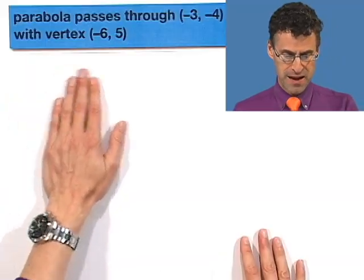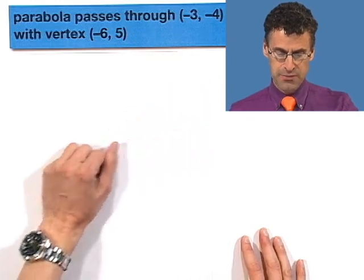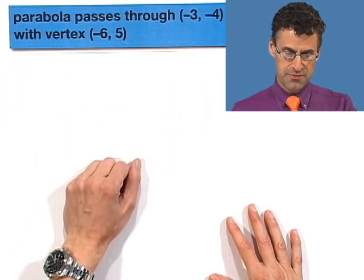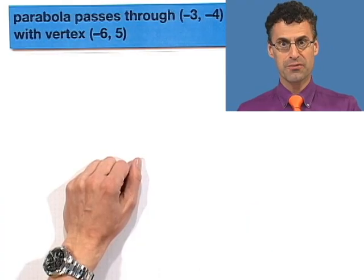Let's find the equation for the parabola that passes through the point negative 3 comma negative 4 and has a vertex of negative 6 comma 5.